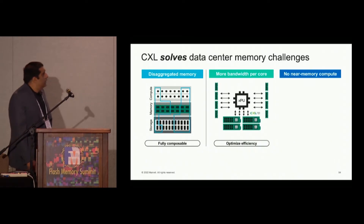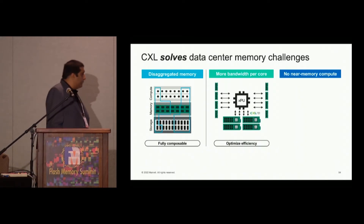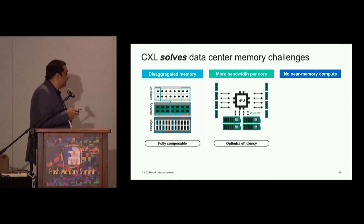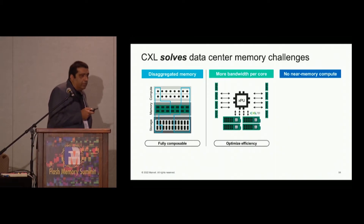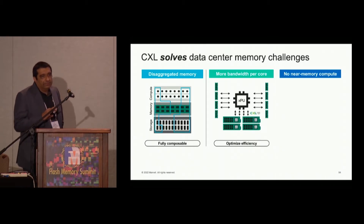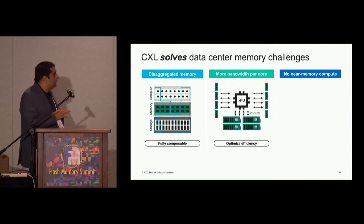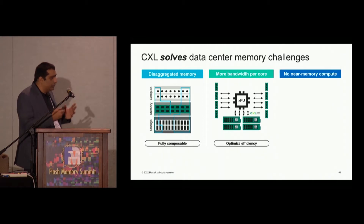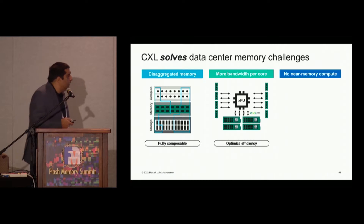Disaggregated memory enables a fully composable system where you get the right amount of CPU, the right amount of memory, and the right amount of storage assigned to a given task in the compute cores. CXL allows us to dynamically assign how much storage and how much memory is required for a given number of cores connected to it.